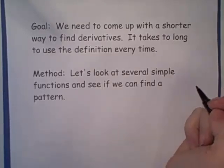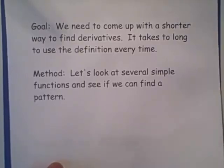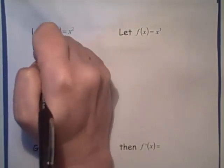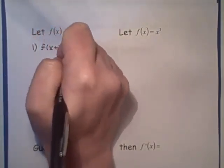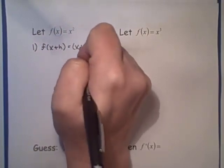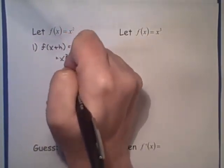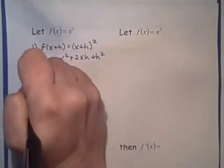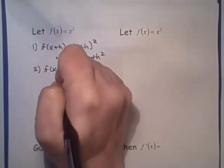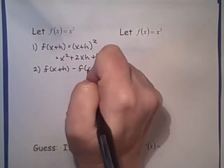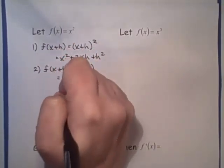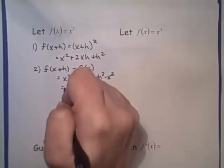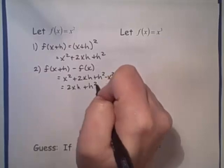So we're going to look at several different functions and see if we can come up with a pattern. Suppose our function is f(x) = x². If we're going to use the definition of the derivative, we compute f(x+h), which is (x+h)² = x² + 2xh + h². Step 2 is to take f(x+h) minus f(x): x² + 2xh + h² − x² = 2xh + h².